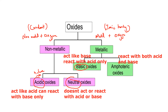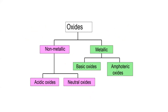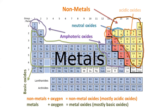A basic oxide has a basic nature, so it can react with acid only. The term amphoteric means dual or two natures — it can react with both acid and base. So the key point is: acidic oxide reacts with base, basic oxide reacts with acid, amphoteric oxide reacts with both, and neutral oxide reacts with neither acid nor base.